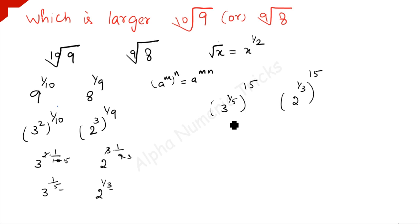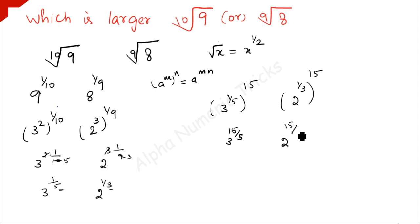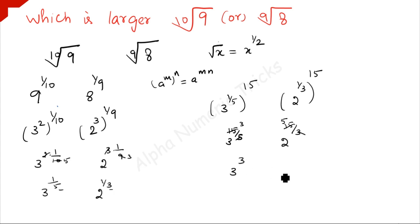Applying the exponent rule again: 3 to the power 15/5 gives 3 to the power 3, and 2 to the power 15/3 gives 2 to the power 5.